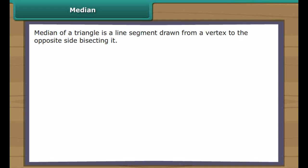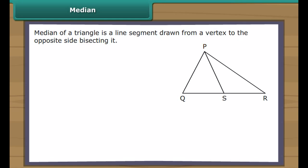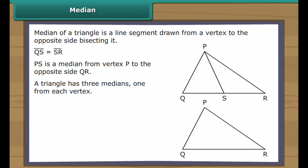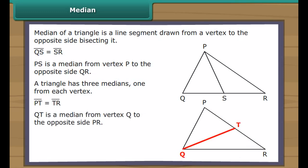In the figure, line segment PS is drawn from vertex P to the opposite side QR. It divides QR into two equal halves. Therefore PS is a median from vertex P to the opposite side QR. A triangle has three medians, one from each vertex. We draw a line segment from Q to cut PR into two equal halves at point T; therefore QT is a median. We draw one more line segment from R to cut QP into two equal halves at point U.